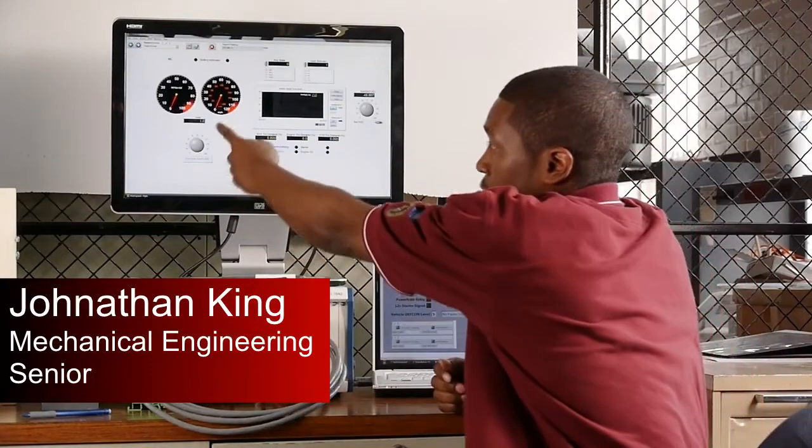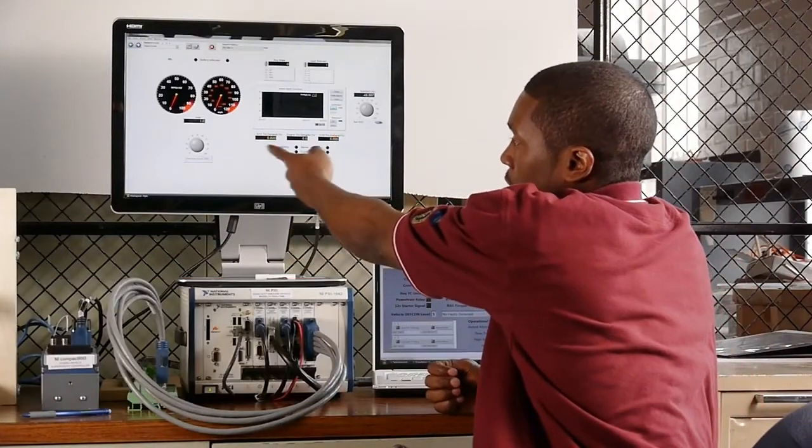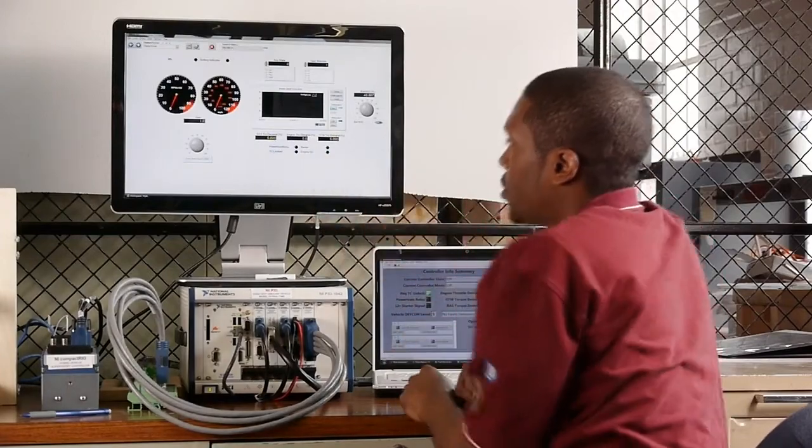The VeriStand workspace gives us information about what's currently happening with the model, as well as controls to allow us to manipulate and drive the model. The workspace is giving us readouts such as engine speed, a vehicle speed trace, transmission gear, and also the battery state of charge.